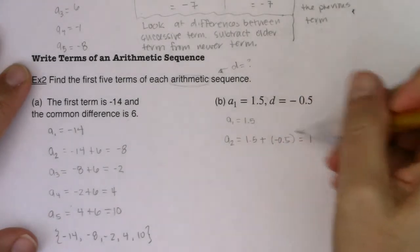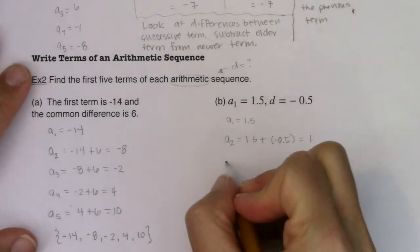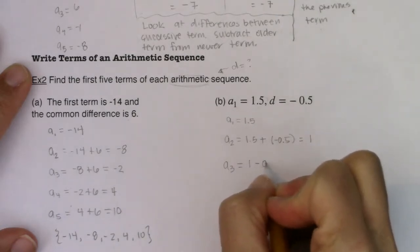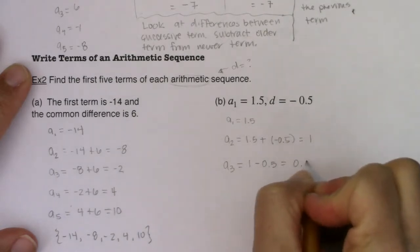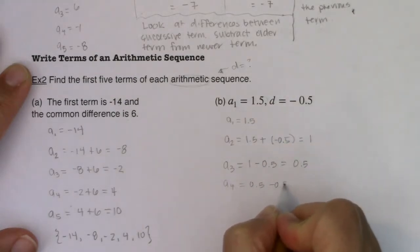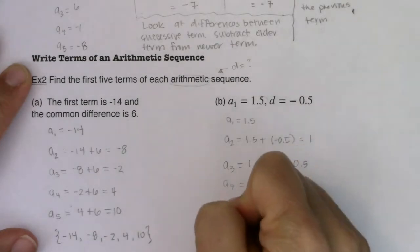And notice that when D is negative, your terms get smaller. So we have A sub three, that would be the preceding term of A sub two minus 0.5. So that's going to be 0.5. To get A sub four, that would be 0.5 minus 0.5, which would be zero.